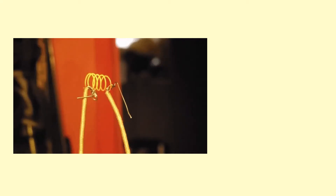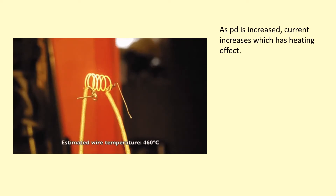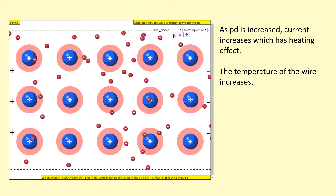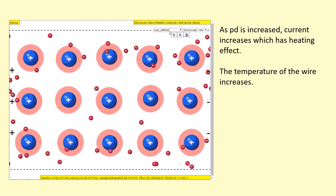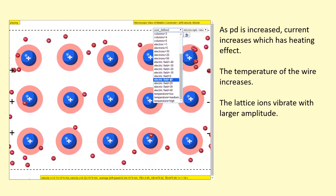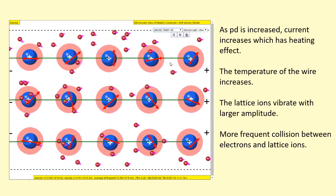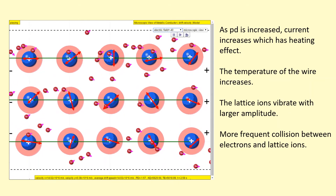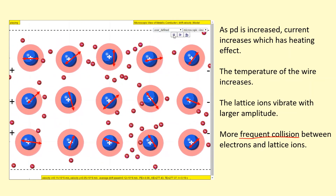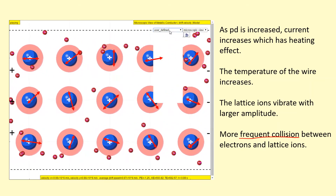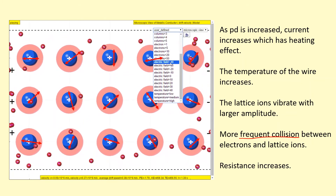If you apply a large enough potential difference, you're going to get a very large current, and this has a heating effect. The temperature of the wire starts to increase. If the temperature goes up, the lattice ions start to vibrate with larger amplitude. And if the lattice ions start to vibrate with larger amplitude, when the electrons flow through them, there's going to be more frequent collisions, or more collisions per unit time, between the electrons and the lattice ions. And this has the effect of increasing the resistance.